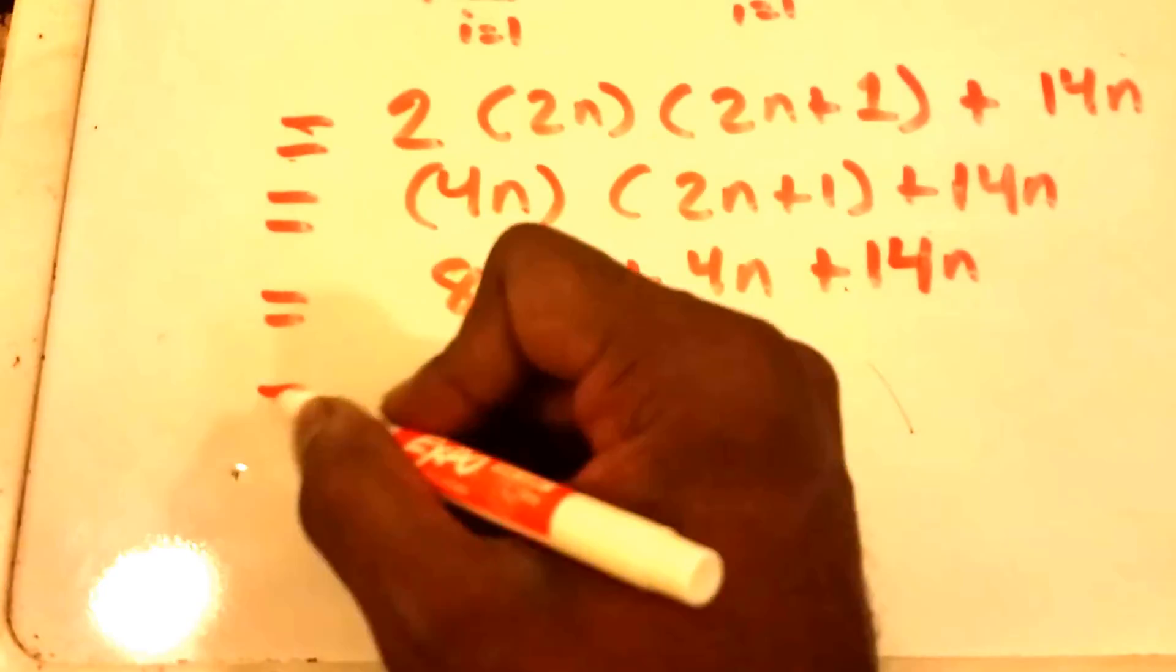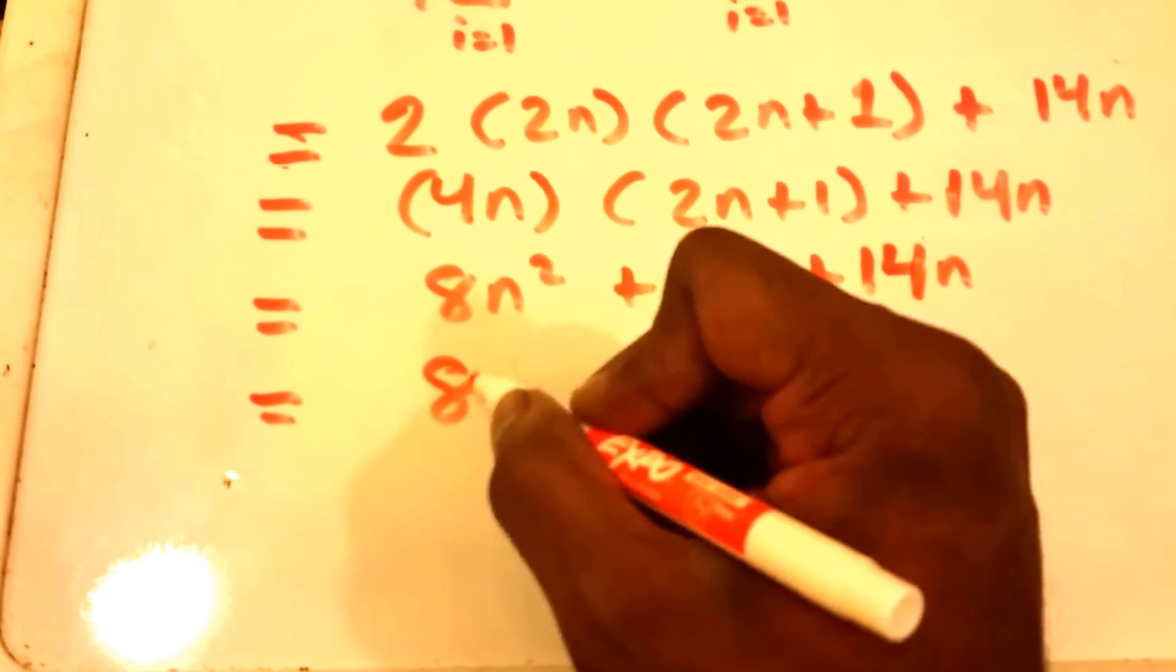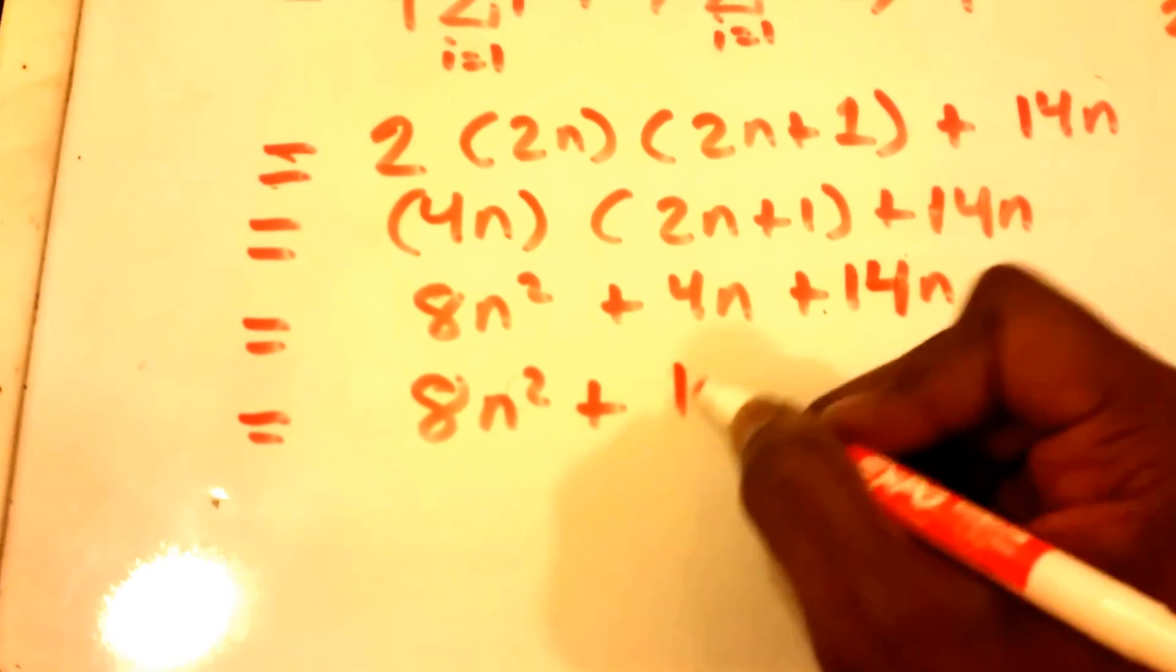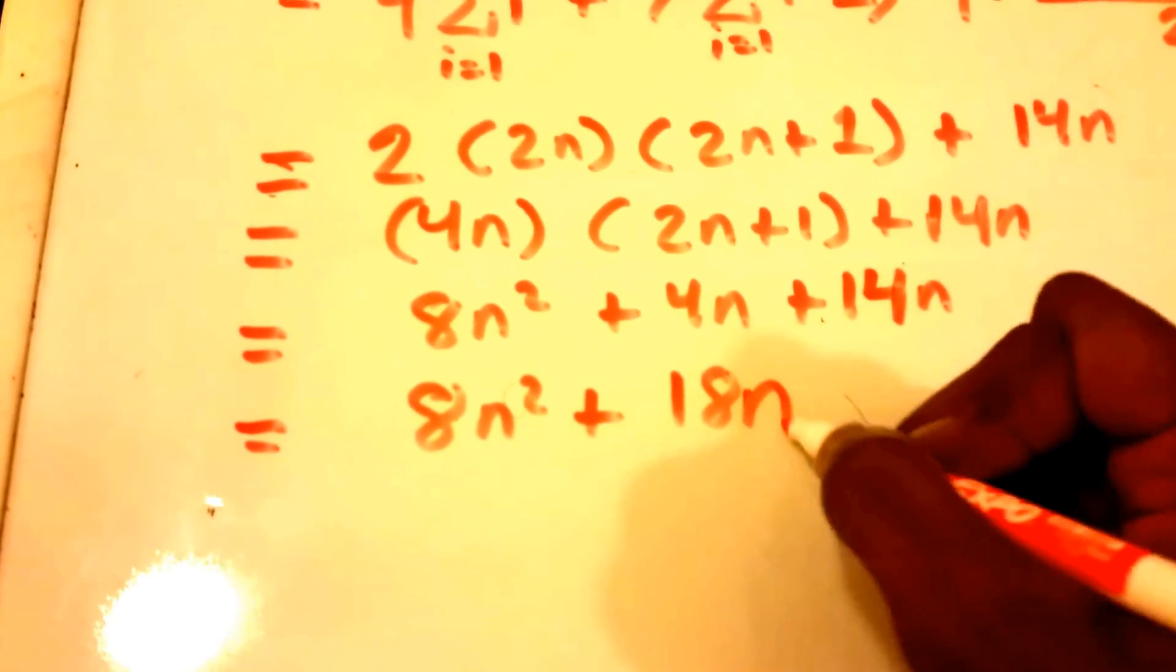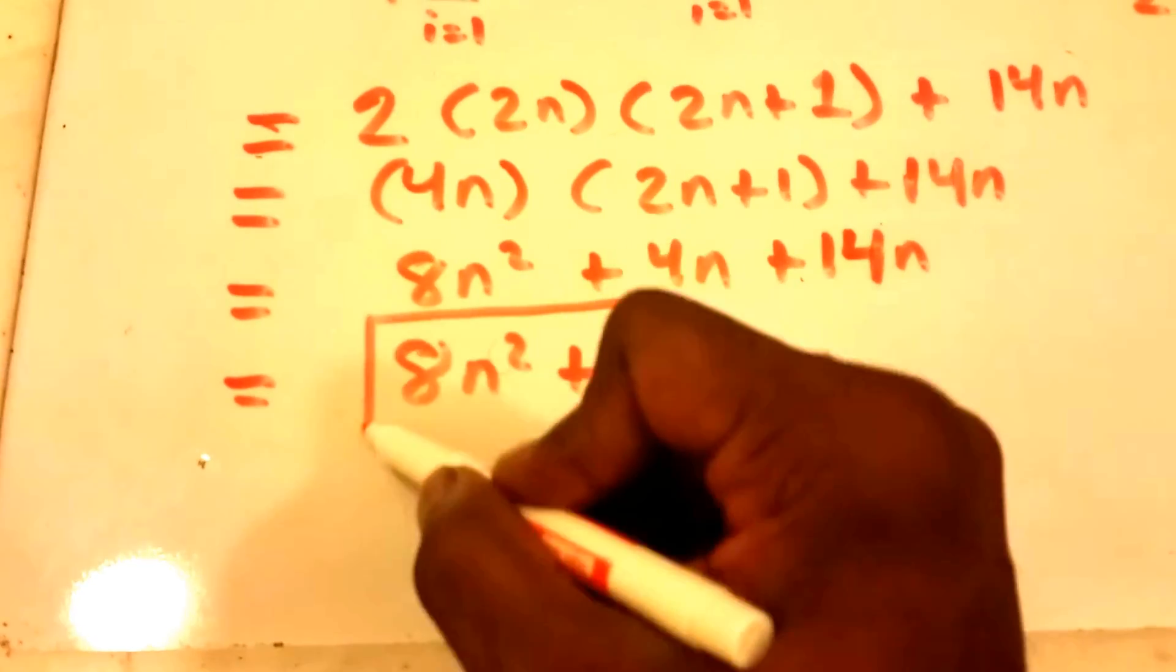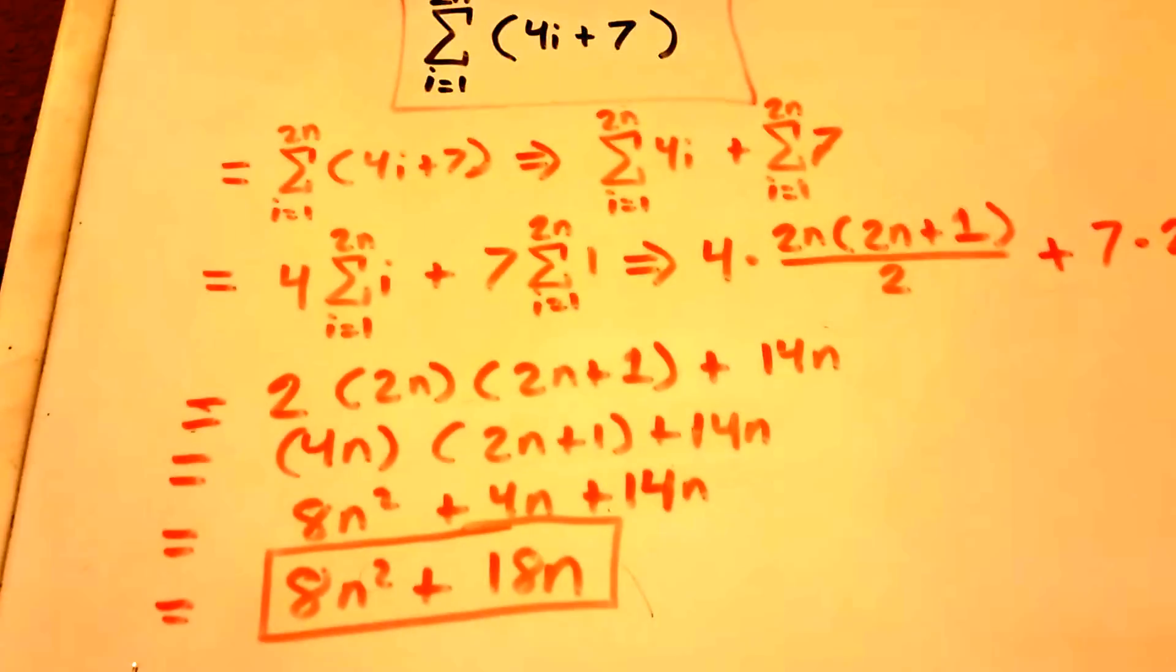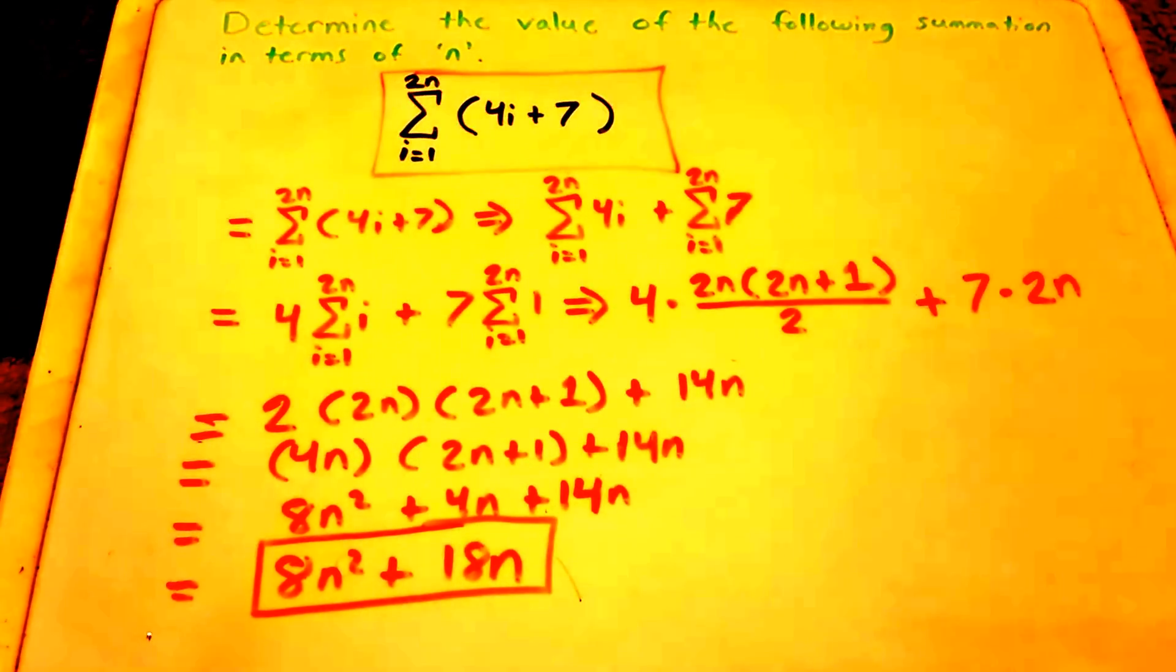And of course we can combine these two, 4n and 14n. So now we get 8n squared plus 18n, and that's our answer.